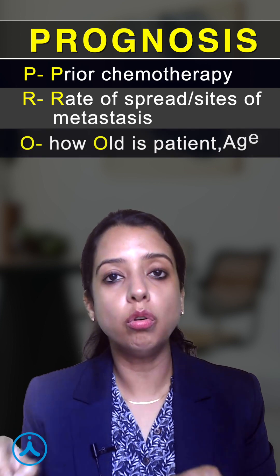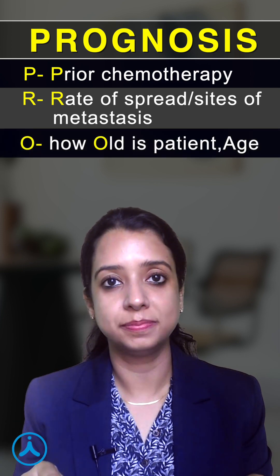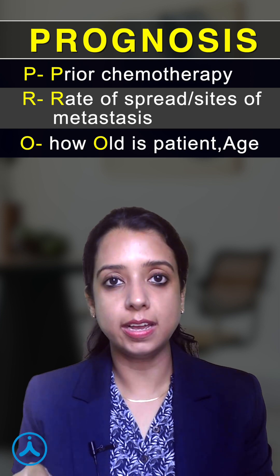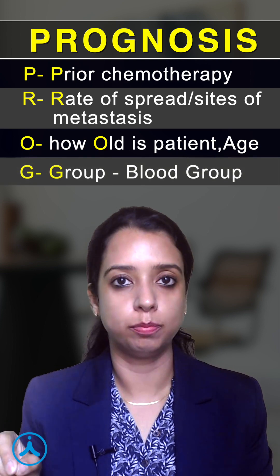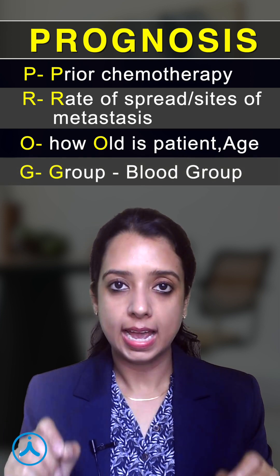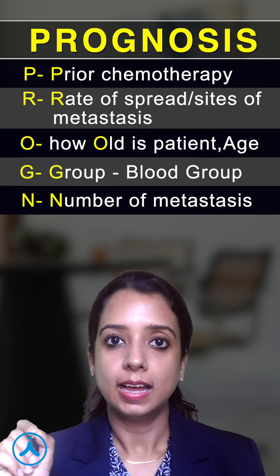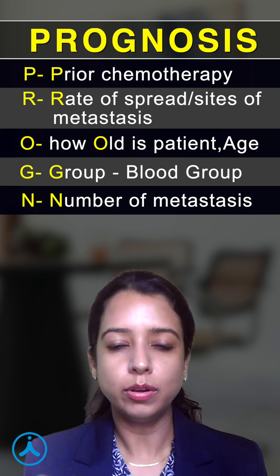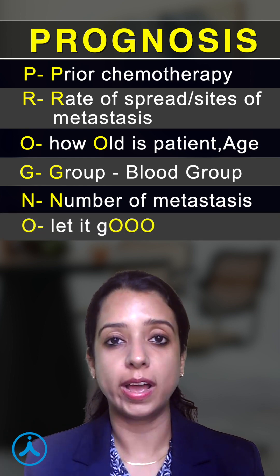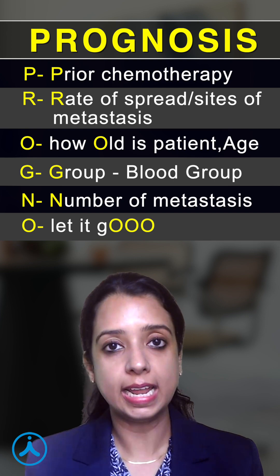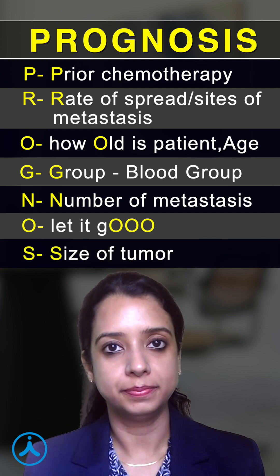O is how old you are — your age. G is group, meaning blood group. N is number of metastases. The second O you can skip and go straight to S.